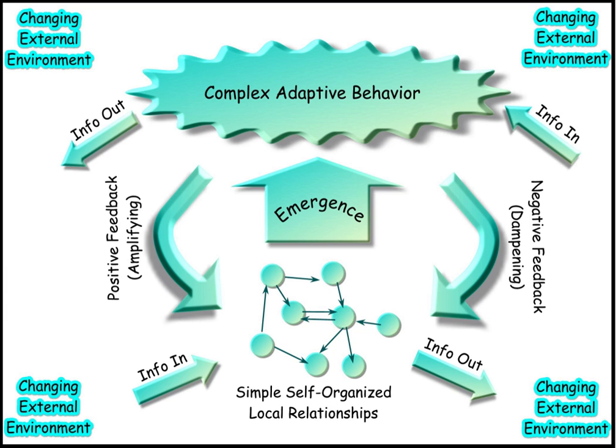Some of the most important characteristics of complex systems are: the number of elements is sufficiently large that conventional descriptions — such as a system of differential equations — are not only impractical, but cease to assist in understanding the system. Moreover, the elements interact dynamically, and the interactions can be physical or involve the exchange of information. Such interactions are rich — any element or sub-system is affected by and affects several other elements. The interactions are non-linear: small changes in inputs, physical interactions or stimuli can cause large effects or very significant changes in outputs. Interactions are primarily, but not exclusively, with immediate neighbors, and the nature of the influence is modulated. Any interaction can feed back onto itself directly or after a number of intervening stages.